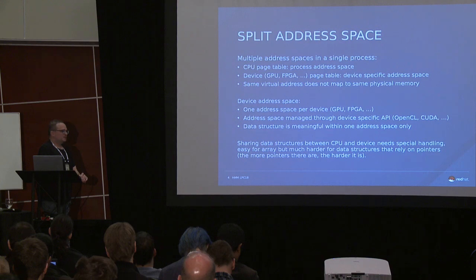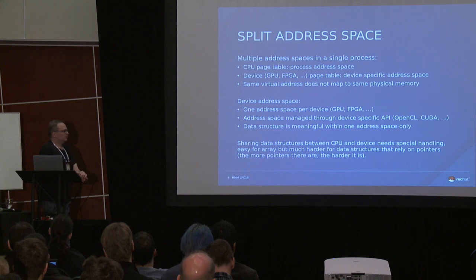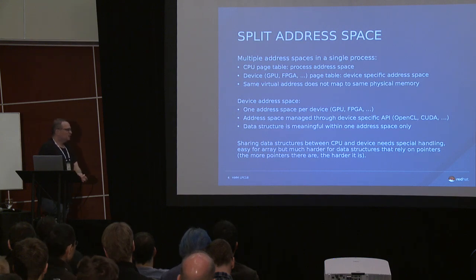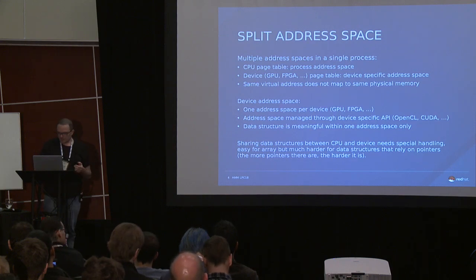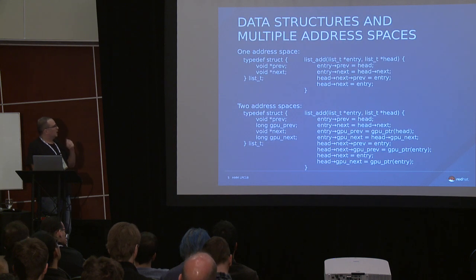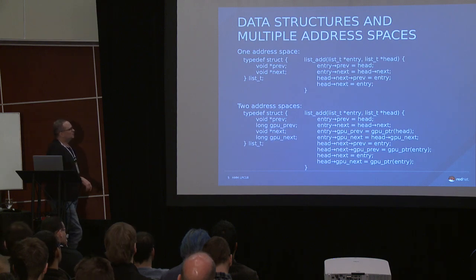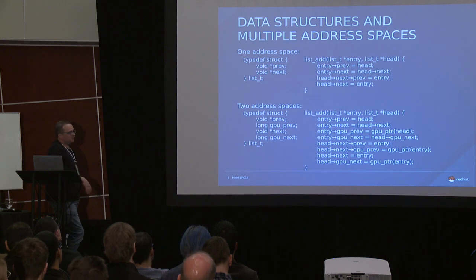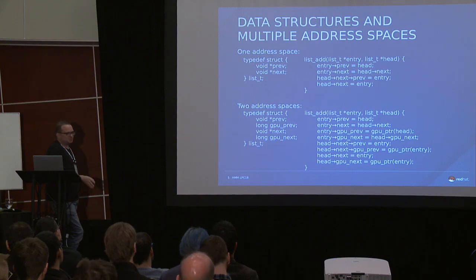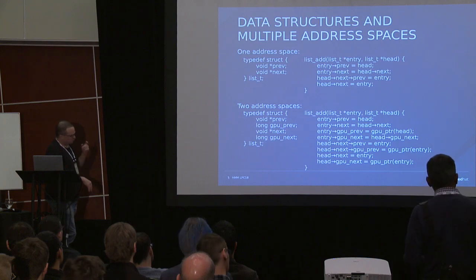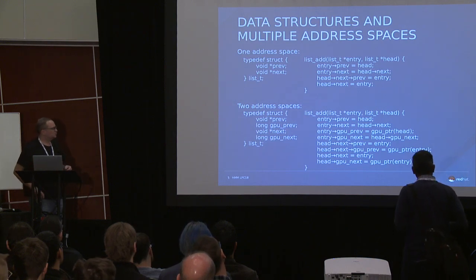Sharing data structures between your CPU and your device is becoming really tedious and complex. You need special handling — you need to use a library or do really complex things. For example, with a doubly linked list, on the CPU side, when you add an entry you just update the next and previous pointers. But when you have two address spaces, such as a GPU, you need extra pointers for the GPU: a GPU prev and a GPU next pointer.